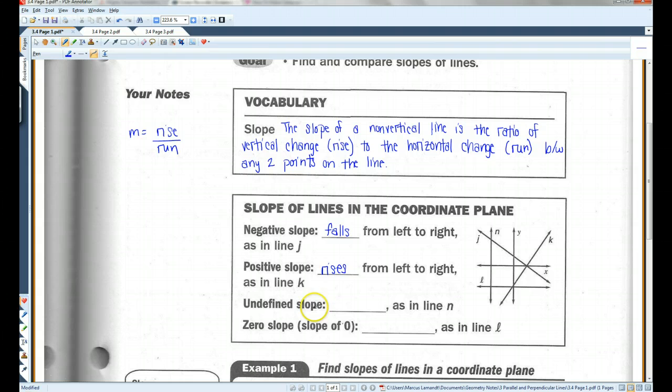Undefined slope is vertical, like line N. This has an undefined slope, or no slope. That's different from a slope of zero. This is going to be horizontal, like line L. Please make sure you don't get these confused.